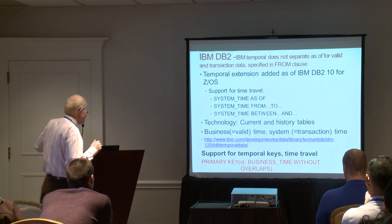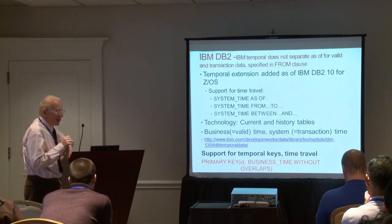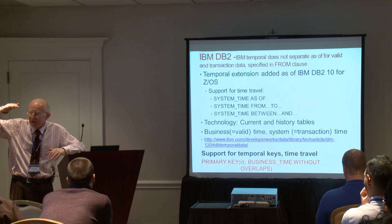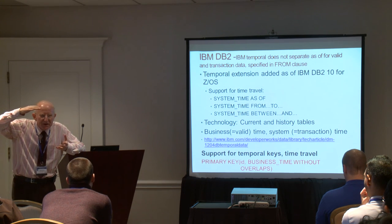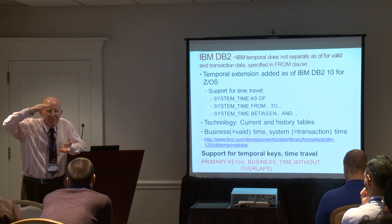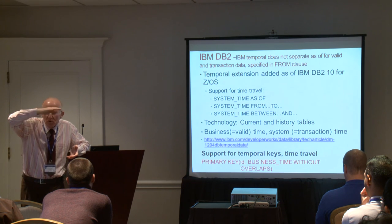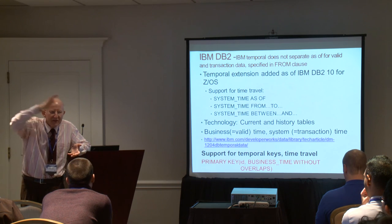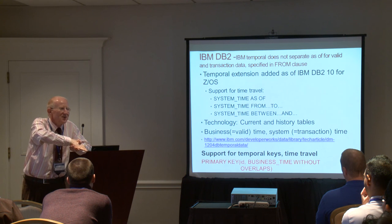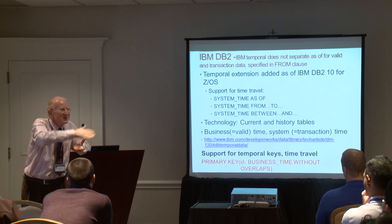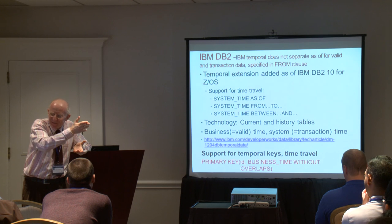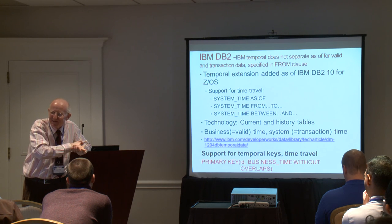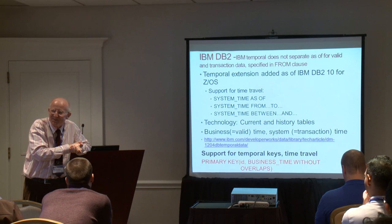IBM implements a temporal table using two tables — a current version and a history version — which was also reflected to some extent in the TARDIS implementation presented by Magnus yesterday.